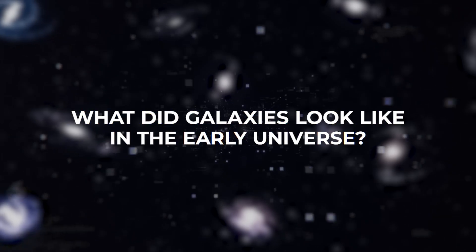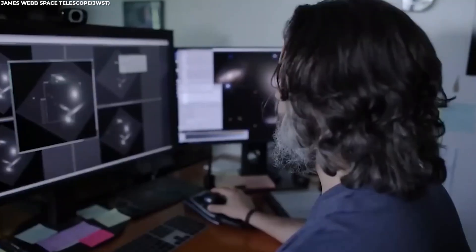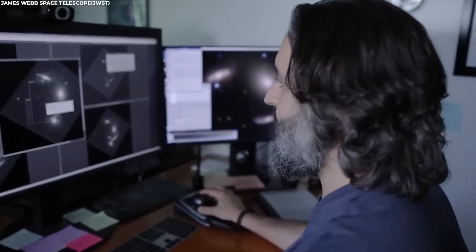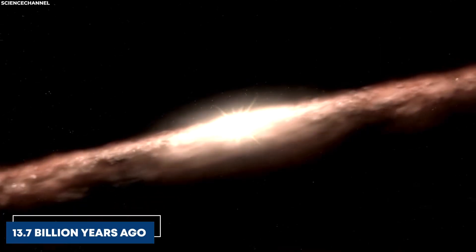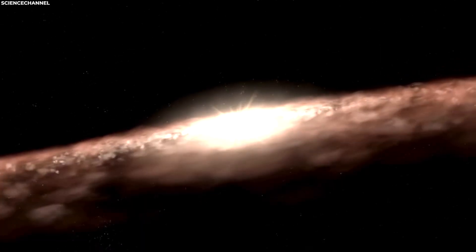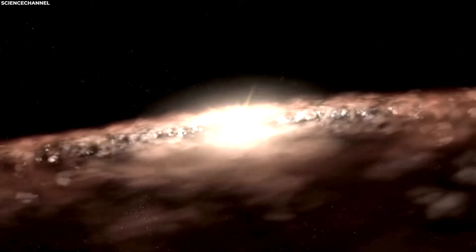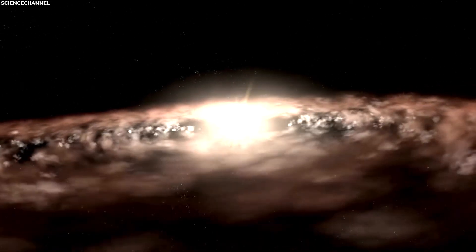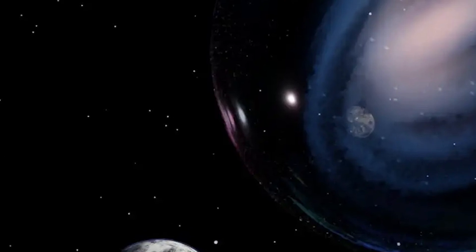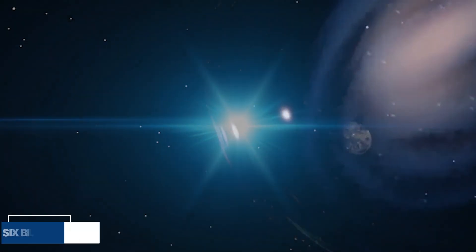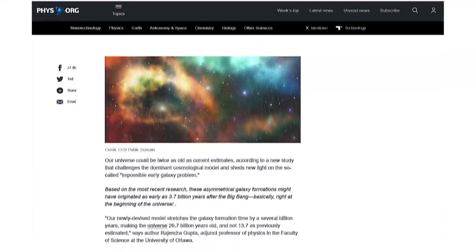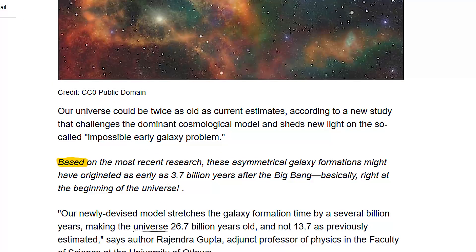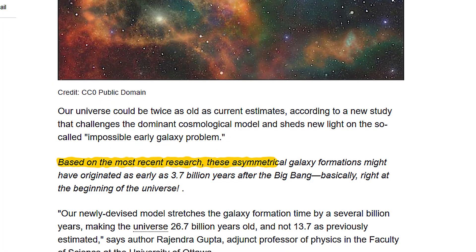So what did galaxies look like in the early universe? Astronomers have been thinking that the galaxies born right after the Big Bang, roughly 13.7 billion years ago, were too delicate to support any structure like spiral arms, bars, or rings. Those flashy galactic accessories were believed to show up at least 6 billion years after the Big Bang. According to the latest study, these seemingly fragile galactic structures could have been born as early as 3.7 billion years after the Big Bang, pretty much at the dawn of the universe.